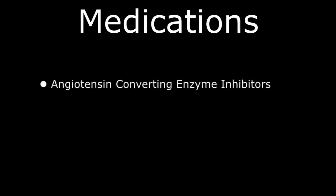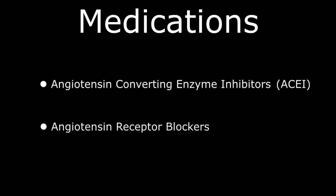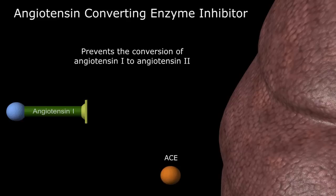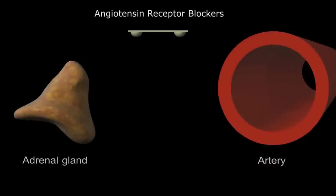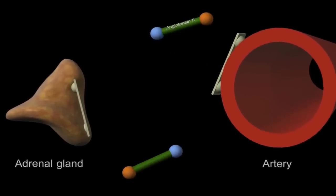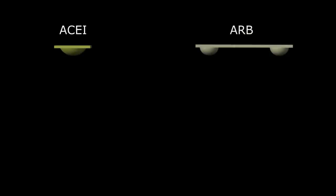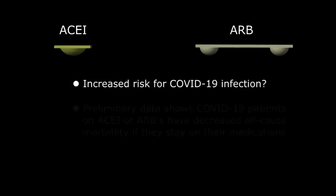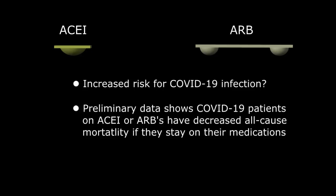There are medications that also counteract the effects of the renin-angiotensin system, including angiotensin-converting enzyme inhibitors, or ACEIs, and angiotensin receptor blockers, or ARBs. ACEIs block angiotensin-converting enzyme from transforming angiotensin 1 to angiotensin 2. Angiotensin receptor blockers work further down the line, blocking angiotensin 2 from binding to its receptors on the blood vessels and adrenal glands. During the early days of the pandemic, there was some concern that both ACEIs and ARBs could increase the risk of viral infection by upregulating the expression of ACE2 surface proteins throughout the body.